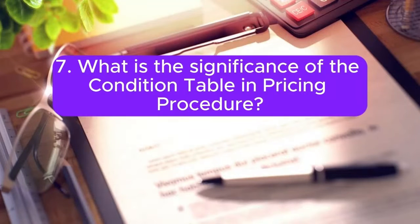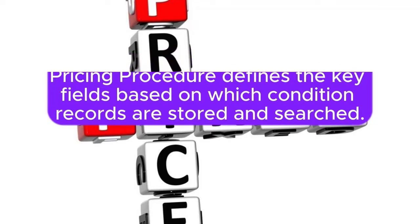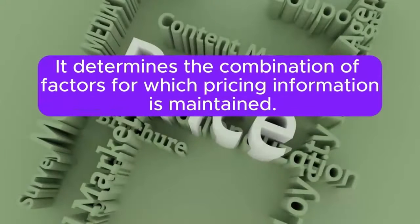Question 7: What is the significance of the condition table in pricing procedure? Answer: The condition table in pricing procedure defines the key fields based on which condition records are stored and searched. It determines the combination of factors for which pricing information is maintained.